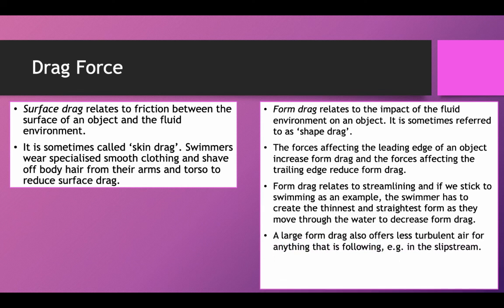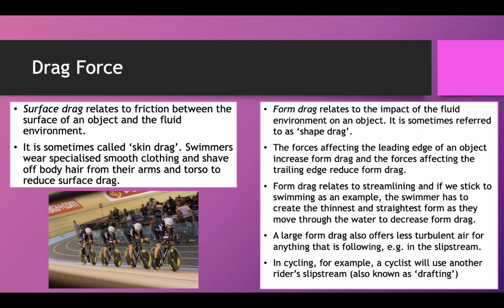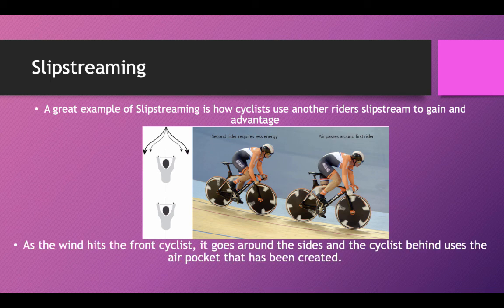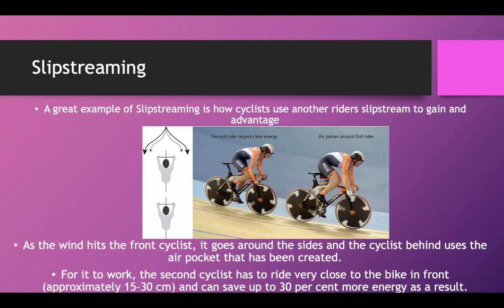A large form drag also offers less turbulent air for anything that is following, e.g. in the slipstream. In cycling, for example, a cyclist will use another rider's slipstream, also known as drafting. The air passes around the first rider, and the second rider requires less energy to keep at the same pace. As the wind hits the front cyclist, it goes around the sides and the cyclist behind uses the air pocket that has been created. For this to work, the second cyclist has to ride very close to the bike in front and can save up to 30% more energy as a result.